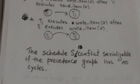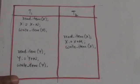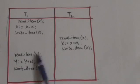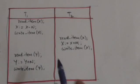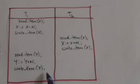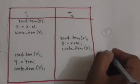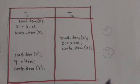Now see another example. This schedule has two transactions, T1 and T2. We have to check the conflict serializability of this schedule. First of all, we will make two nodes labeled T1 and T2.